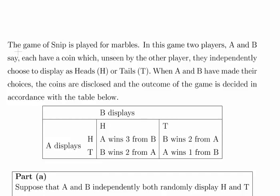So I'm A and I pick either heads or tails, and you're B and you pick either heads or tails. You make a choice, and then when we've both made our decision, we disclose our choices to each other. When A and B have made their choices, the coins are disclosed, we show each other what we've picked, and the outcome of the game is decided in accordance with the table below.